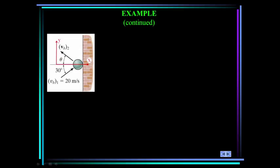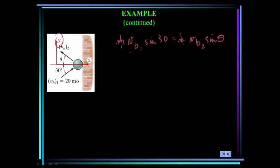First, momentum of the ball is conserved in the y direction: mass times the y-velocity before impact equals mass times the y-velocity after impact. The y-component before impact is 20 sine 30. The masses cancel, giving 20 times 0.5 equals 10, so 10 equals V_B2 times sine of theta. That's the first equation.